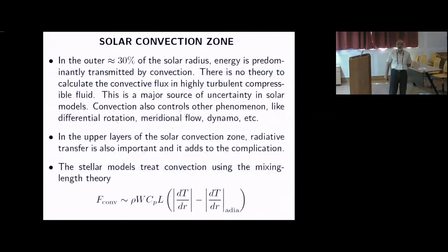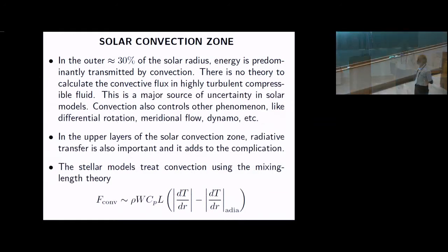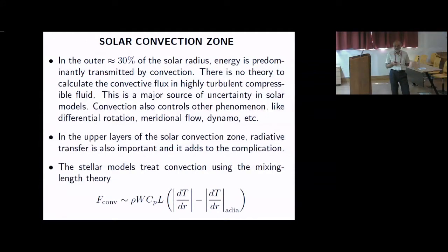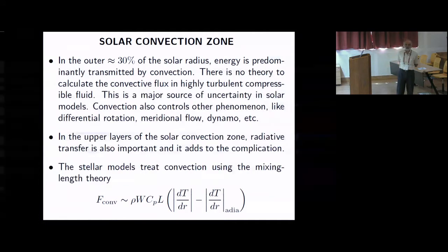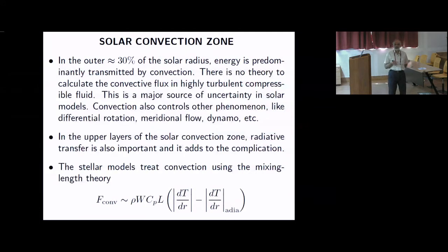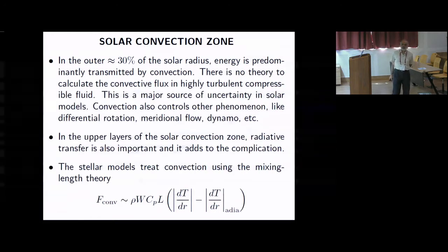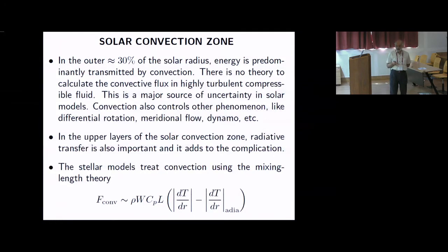In the outer 30 percent of the solar radius, energy is transmitted by convection. There is no theory to calculate the convective flux in this highly turbulent, compressible fluid, and this is a major source of uncertainty. In the upper layers of the solar convection zone, radiative transfer is also important, and convection becomes inefficient because the density is very low — about 3×10⁻⁷ grams per cc near the top of the convection zone — too low to transmit the flux by convection alone.